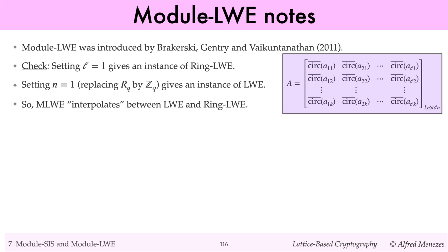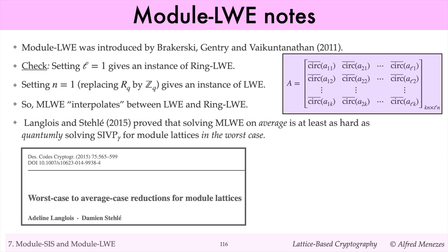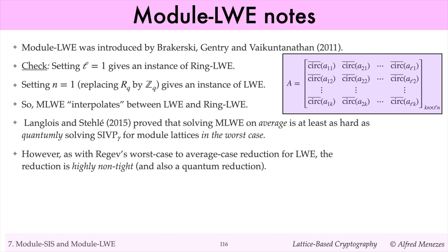In 2015, Langlois and Stehlé proved that solving module LWE on average is at least as hard as quantumly solving approx SIVP for module lattices in the worst case. As with Regev's worst case to average case reduction for LWE, this guarantee is an asymptotic one, and in addition is a quantum reduction.